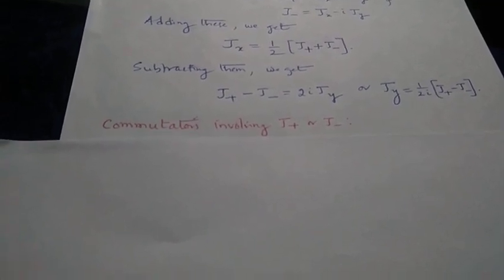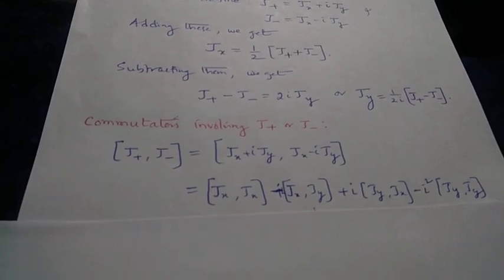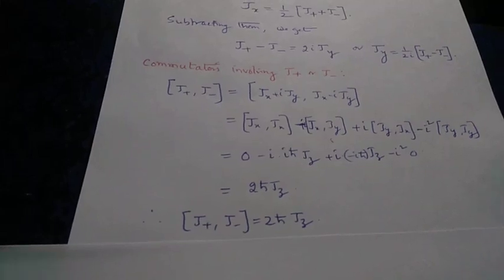To prove J+ is a raising operator and J− is a lowering operator, we compute commutator relationships. The commutator of J+ and J− expands into four commutators; since [Jx, Jx] and [Jy, Jy] are zero, the first and fourth terms vanish. The second term gives i*h-bar*Jz and the third gives −i*h-bar*Jz, so the right-hand side sums to 2*h-bar*Jz. Thus [J+, J−] = 2*h-bar*Jz.